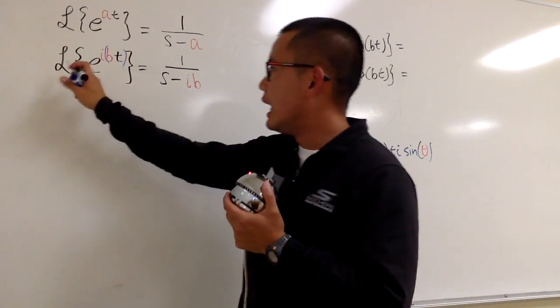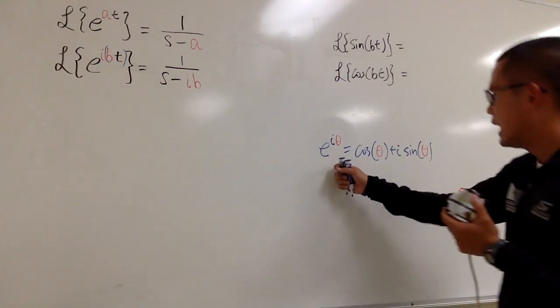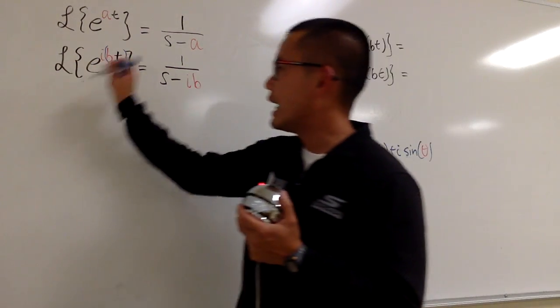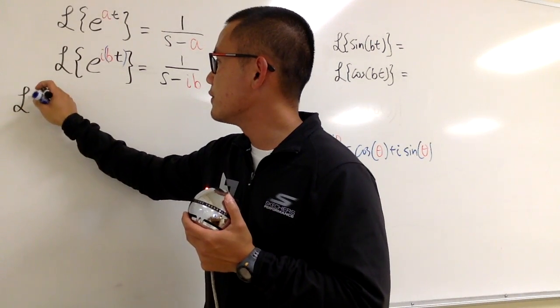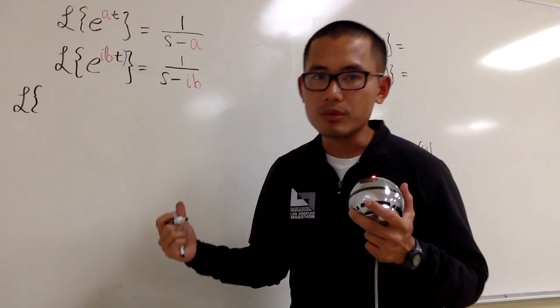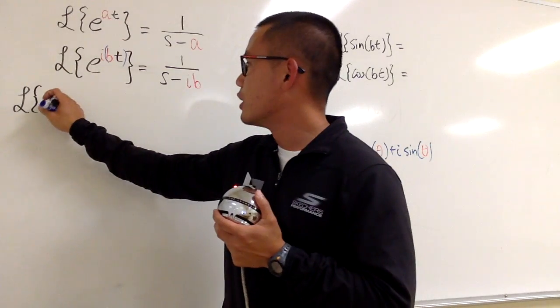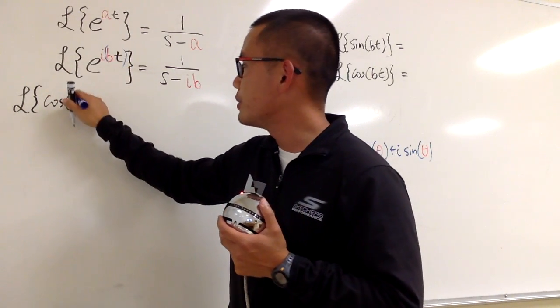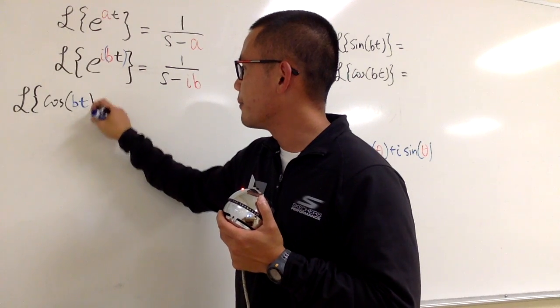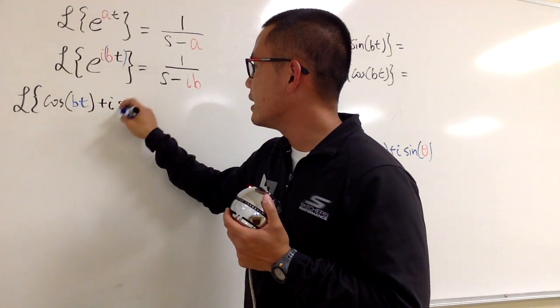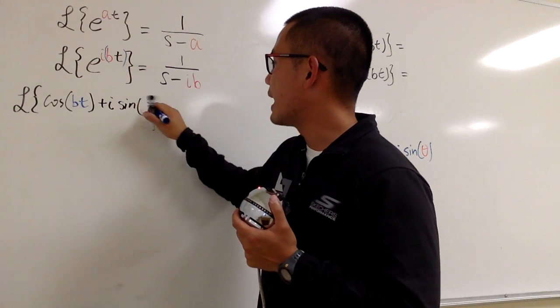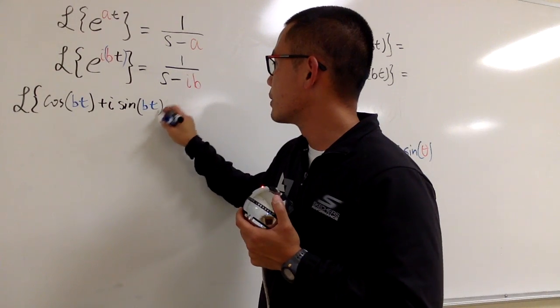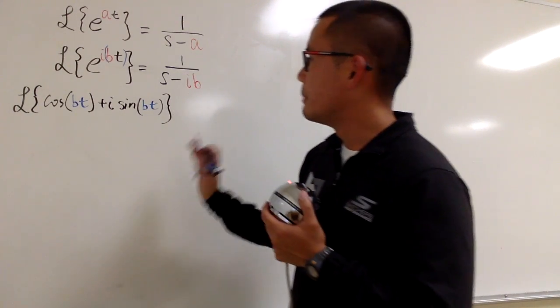On the left-hand side, I will just use this. Because we will have the Laplace transform, by the Euler's formula, we know we will have cosine of the theta, which is the bt here, bt, and then plus i times sine of that, bt. And this is very, very nice.